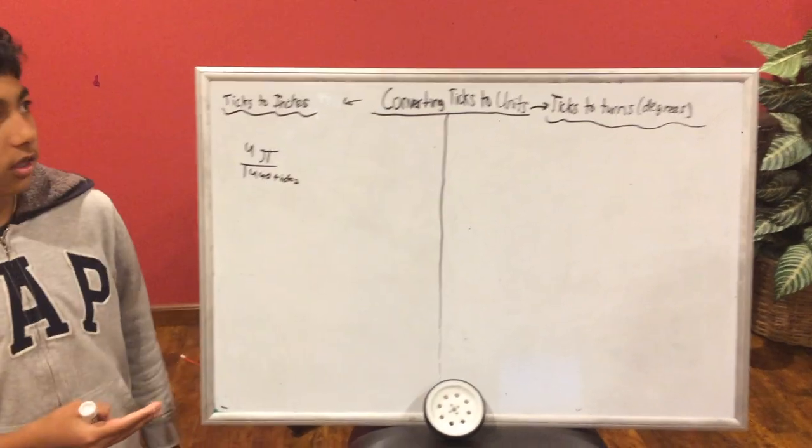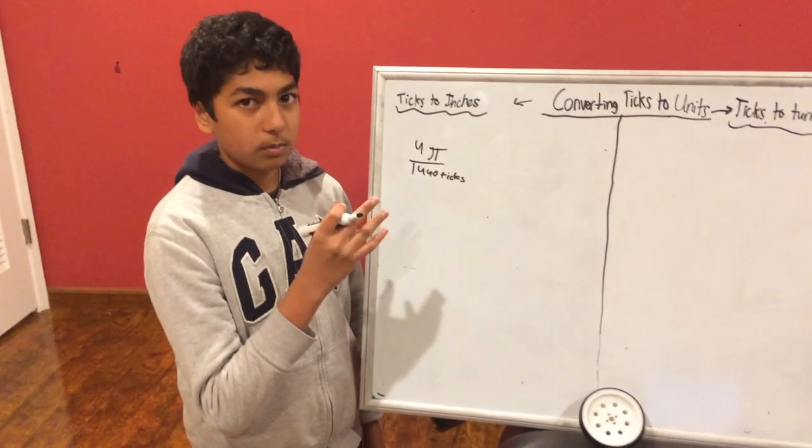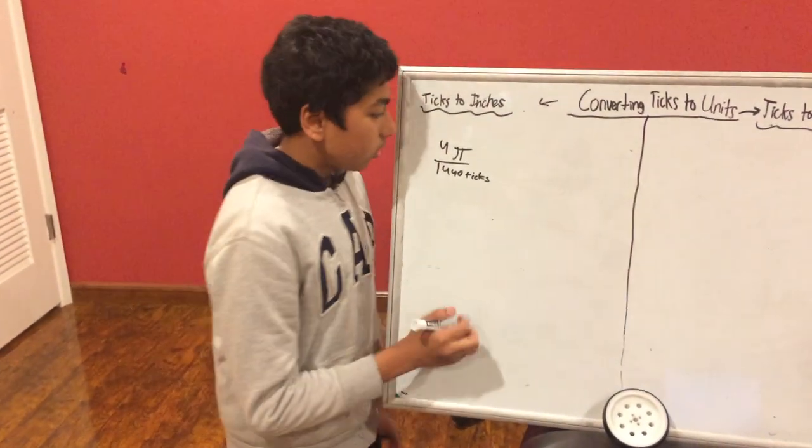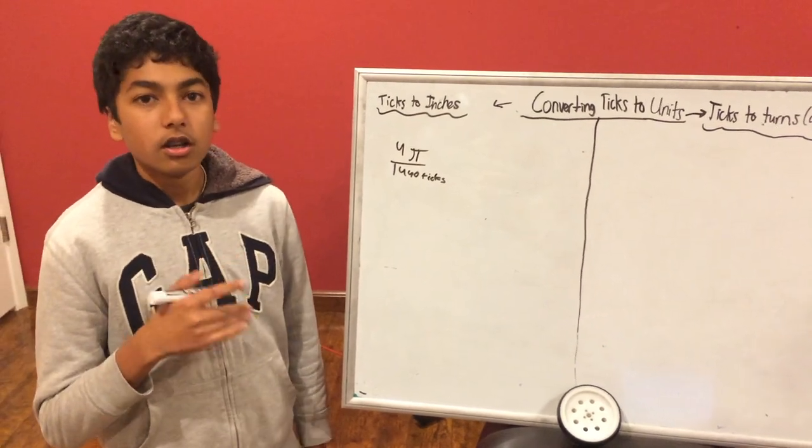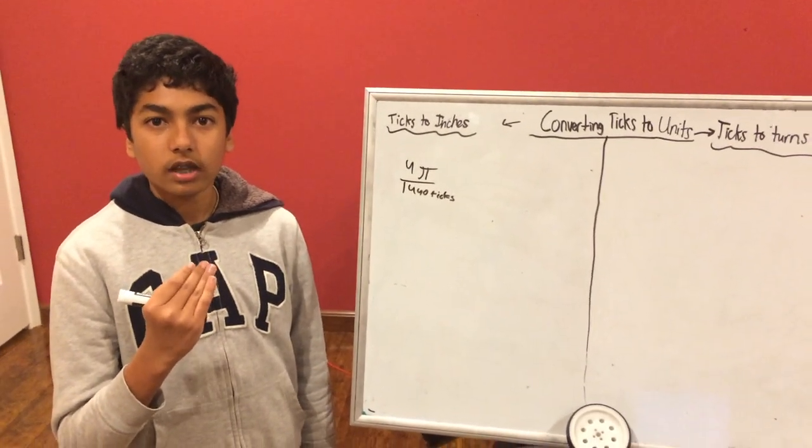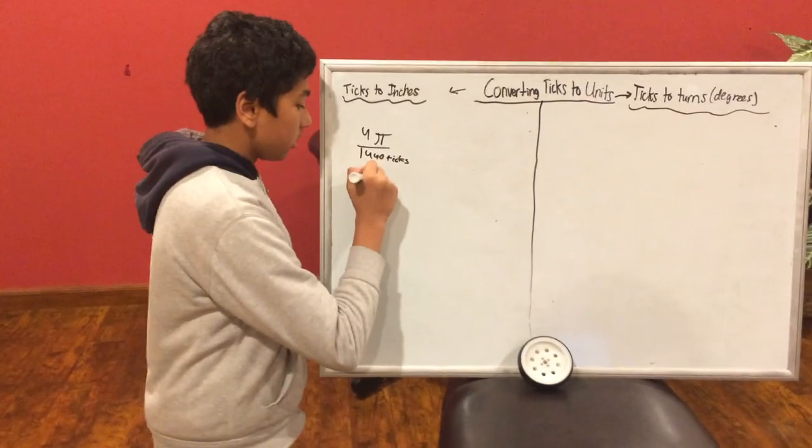So this gives us the essential ticks per rotation. Now, when we first used encoders, we tested out and we found out that 6875 ticks are in 5 feet.